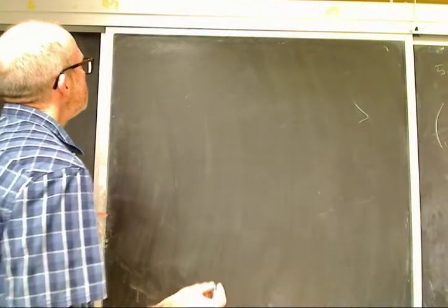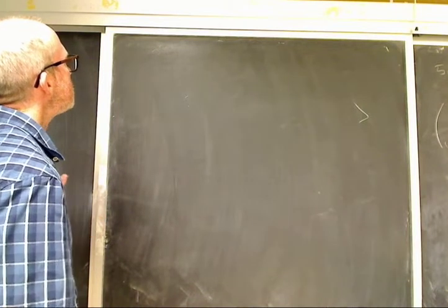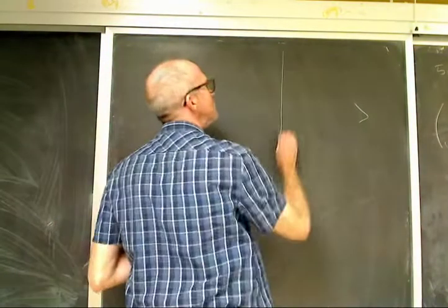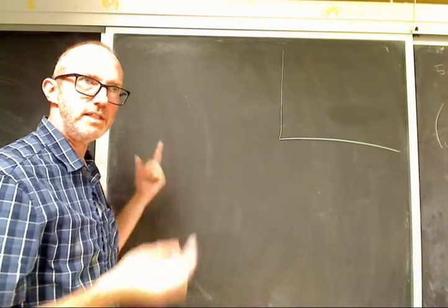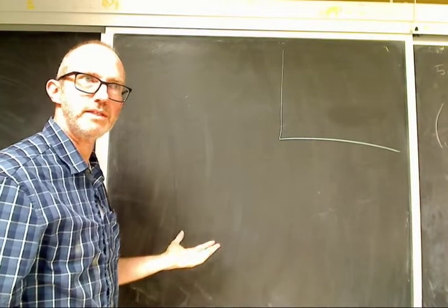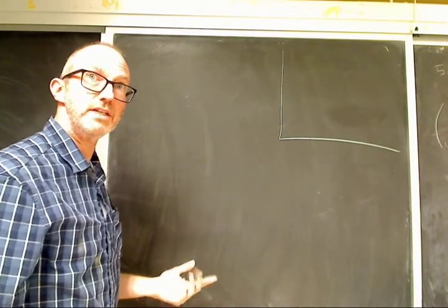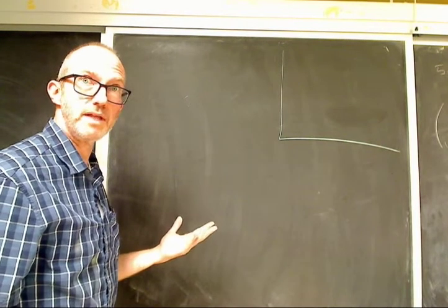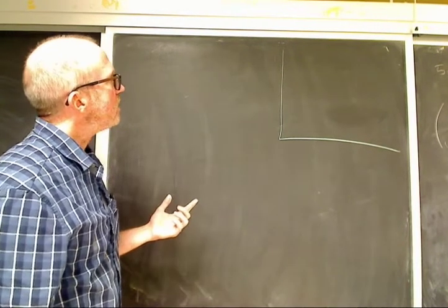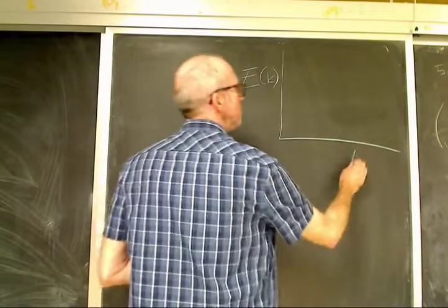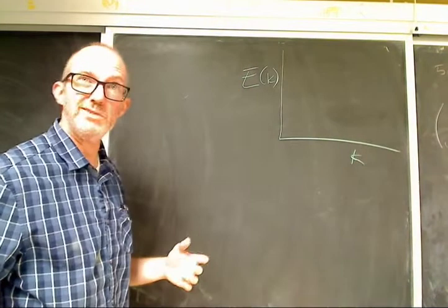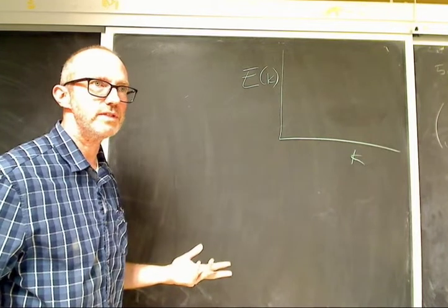I'm going to draw something that if you continue your career in astronomy you will see show up, because astronomers and geophysical fluid dynamics people will put up plots like this. So this is energy as a function of k — this is wave number k. We do a lot of stuff in spectral space because it's nice. So we have a couple of different scales.